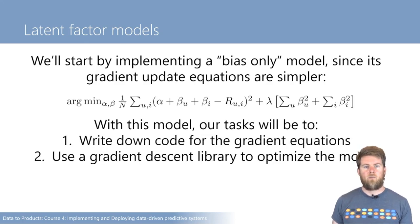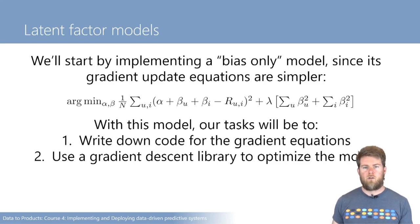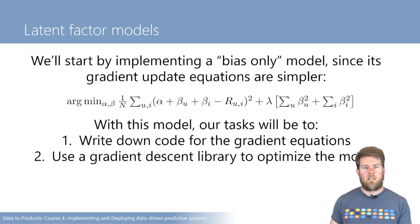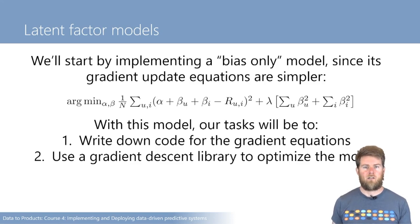So this is going to be the model we're going to try and implement using gradient descent. We have this bias-only model including an offset alpha, a user bias, and an item bias term, as well as a regularizer for those biases. We're going to try and write down the gradient equations and convert those to code, and then use a gradient descent library to try and optimize the model. We saw previously that trying to get all of the details about gradient descent correct can be very difficult, so we're going to try and use a library function to help us.